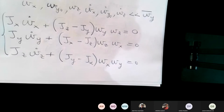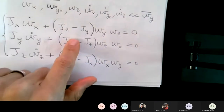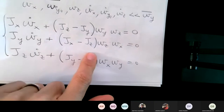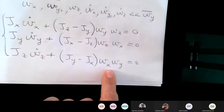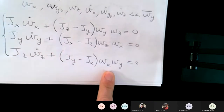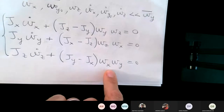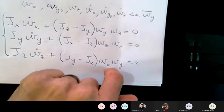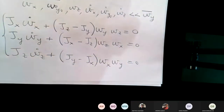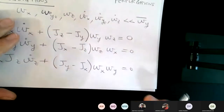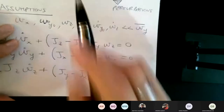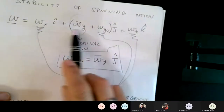Okay: J_x omega_x dot, (J_z minus J_y), (J_x minus J_z), (J_y minus J_x) — perfect. So these will be the equations I need. Let me recover my camera otherwise I don't know what I'm looking at. And now I'm going to substitute the angular velocity that I have.